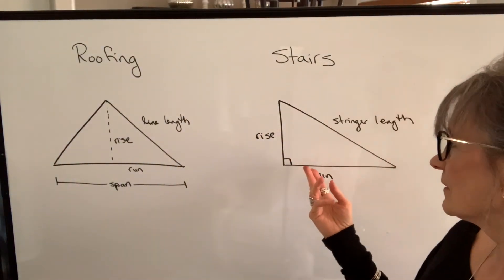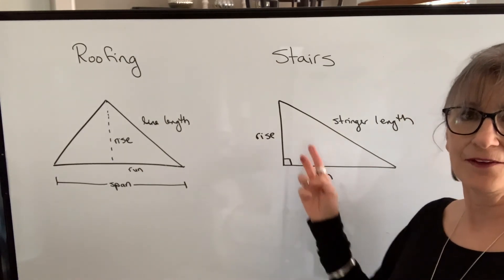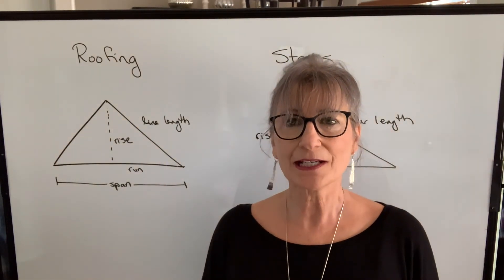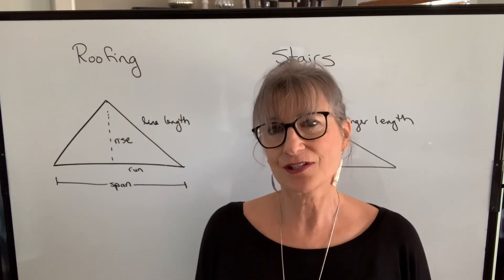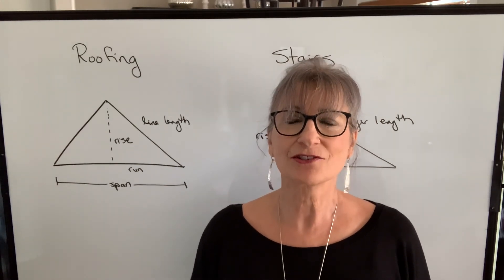Similarly, with stairs, to calculate your stringer length, you would need to know the rise and the run, and then you could calculate your stringer length. You could also use it to find what diagonal length needs to be used for a support. So there are many applications of using the right triangle theorem in trades and especially in construction trades.